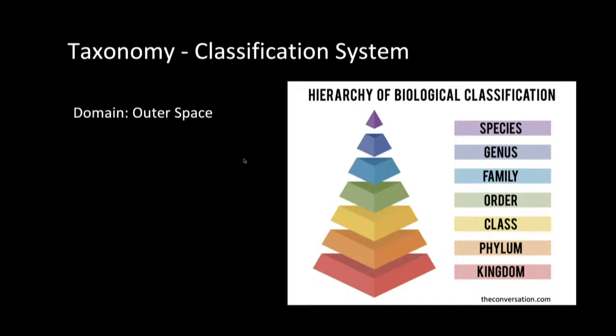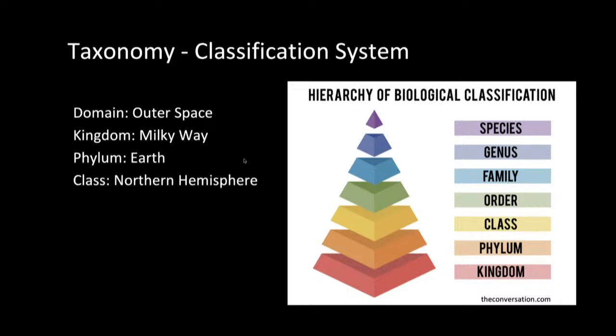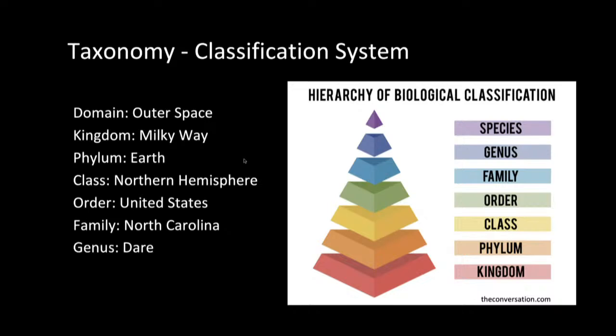For our domain, we have outer space. For the kingdom, we have the Milky Way. For phylum, we have planet Earth. From there it starts to get more specific — we're in the Northern Hemisphere, in the United States. Our family would be considered North Carolina. Our genus would be Dare County. And finally, our species — or in this case, the town — would be Wanchese.